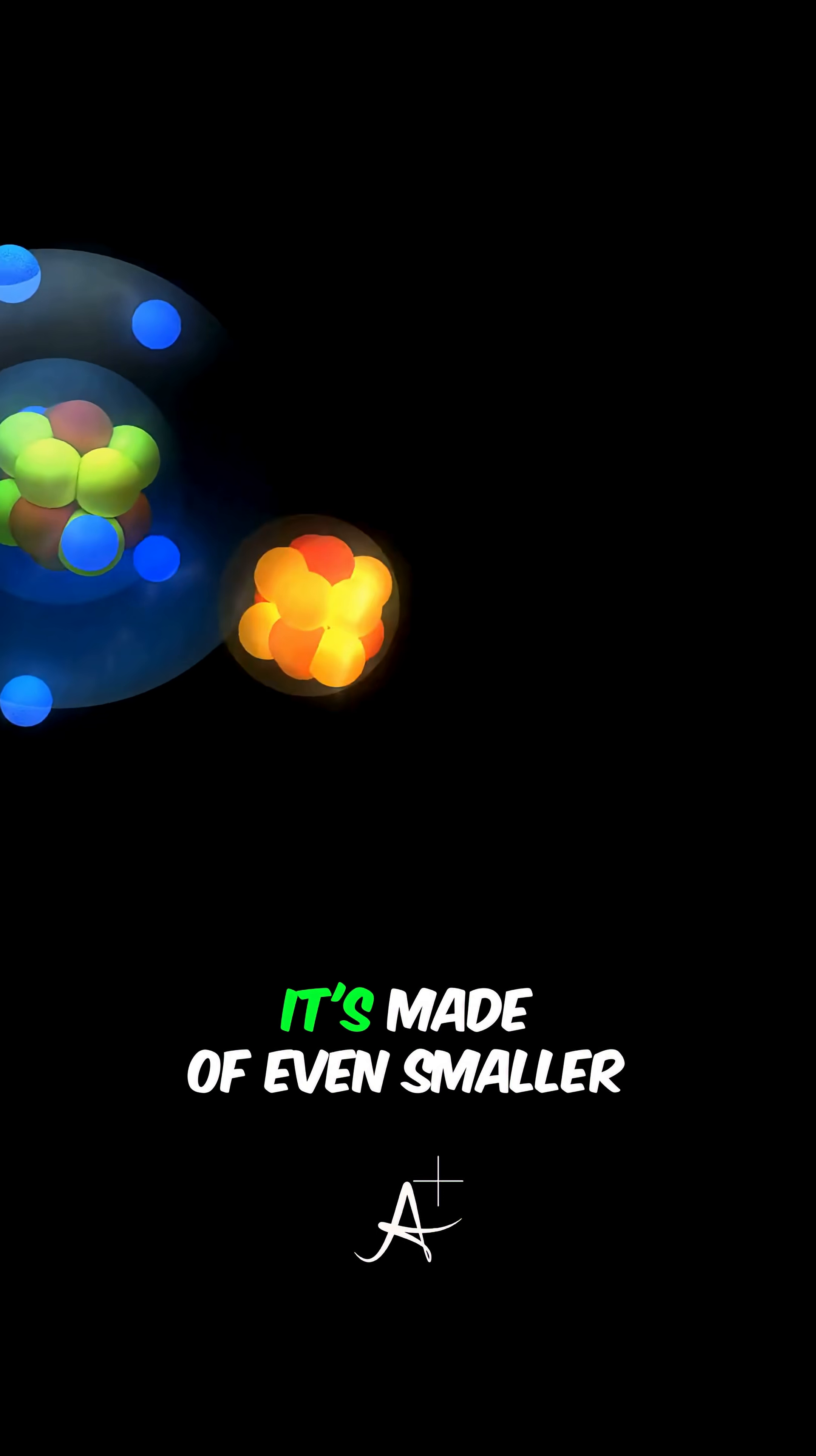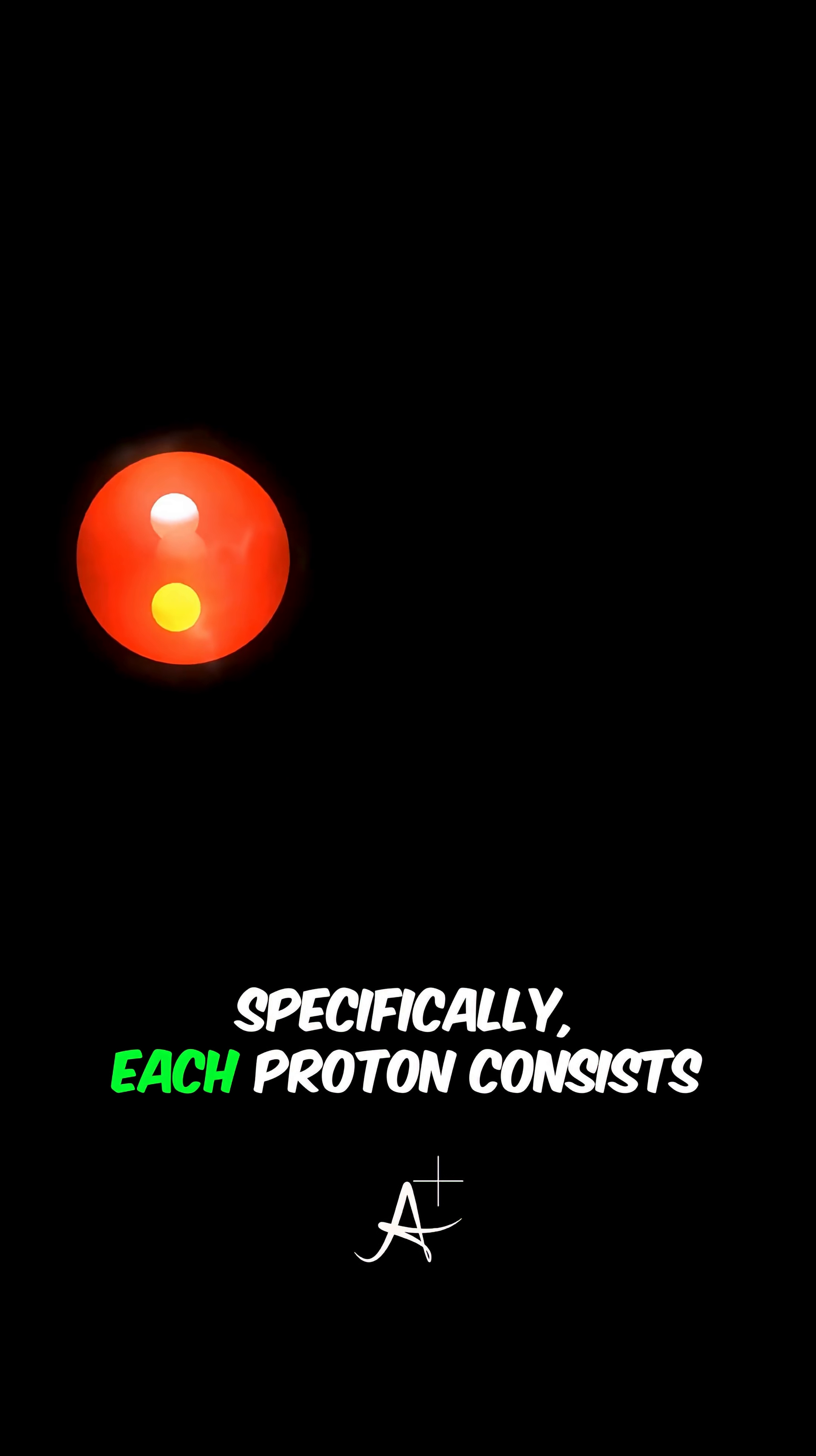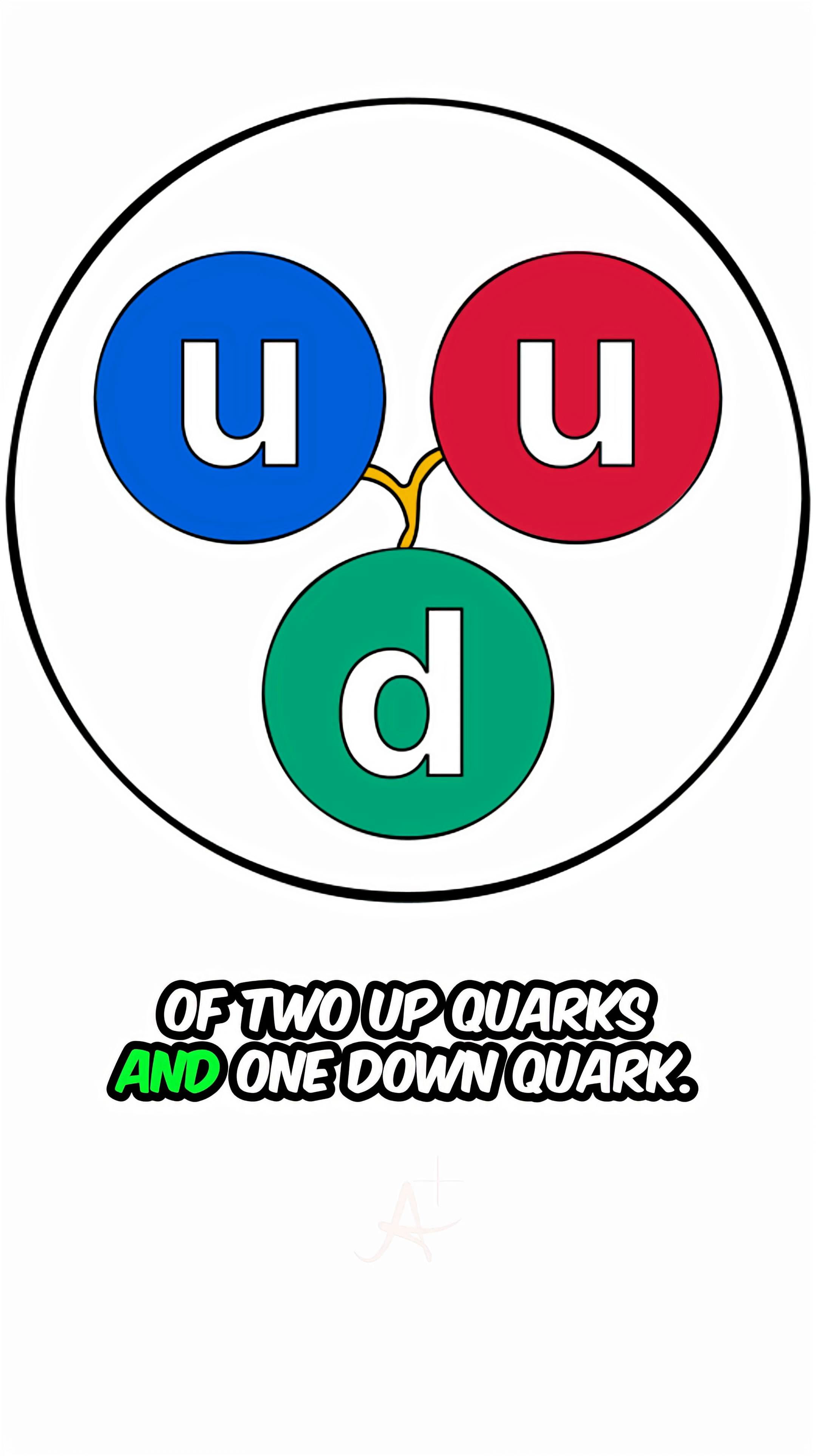A proton isn't solid, it's made of even smaller components called quarks. Specifically, each proton consists of two up quarks and one down quark.